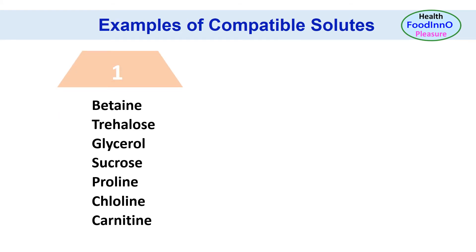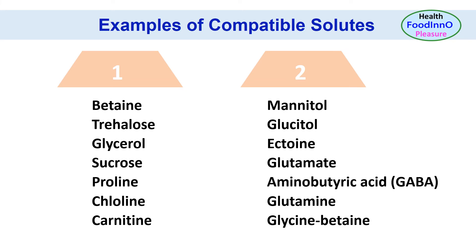Examples of compatible solutes include: betaine, trehalose, glycerol, sucrose, proline, choline, carnitine, mannitol, glucitol, ectoine, glutamate, amino butyric acid, glutamine, and glycine betaine.